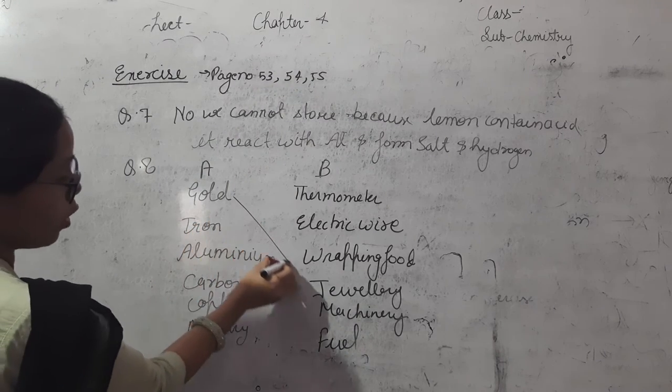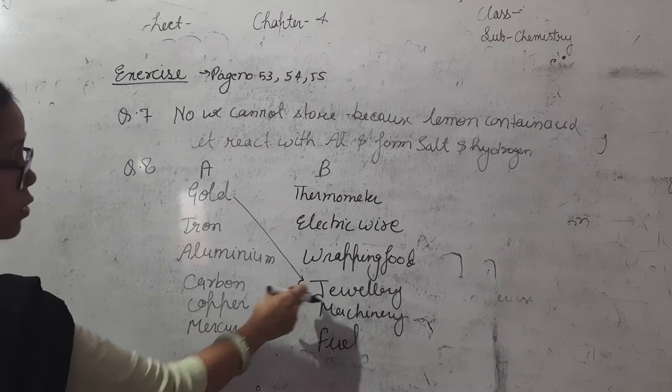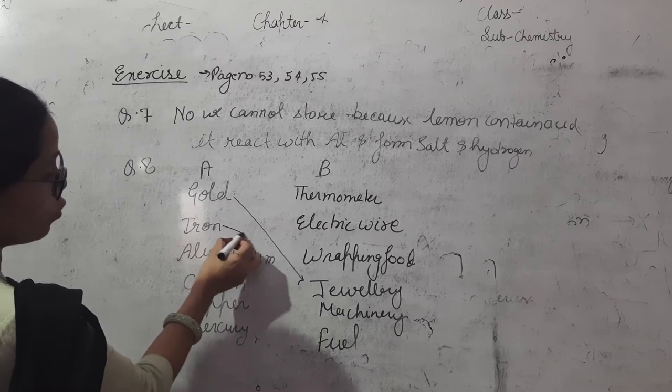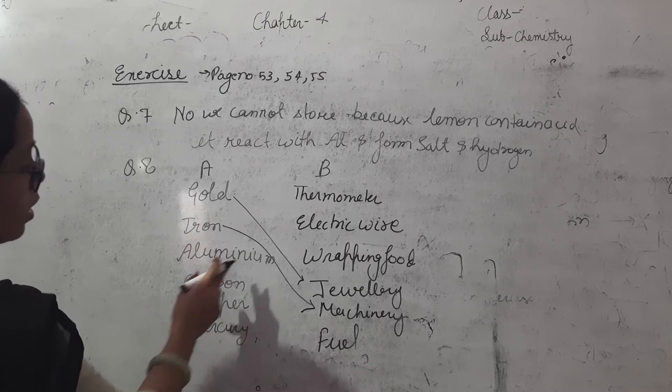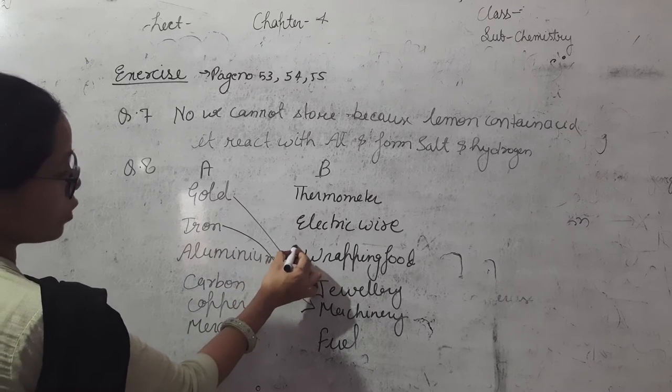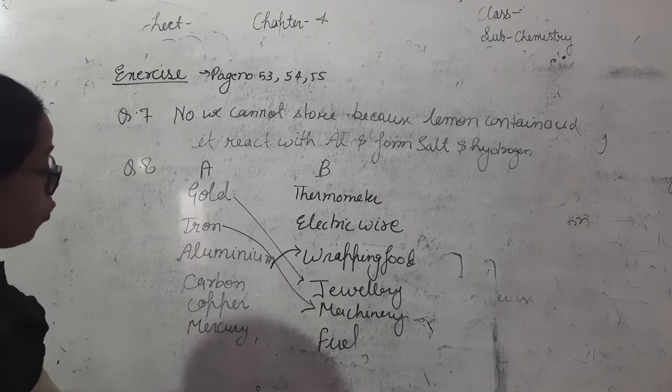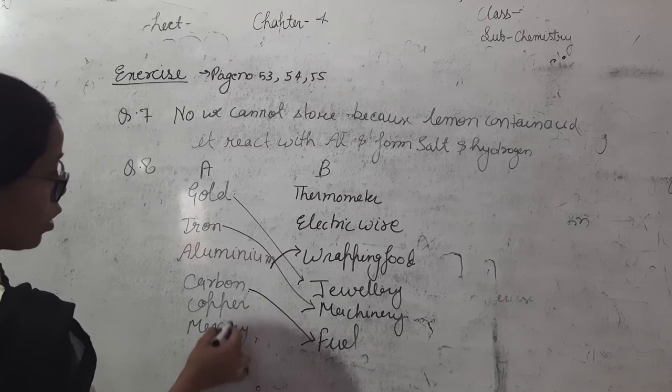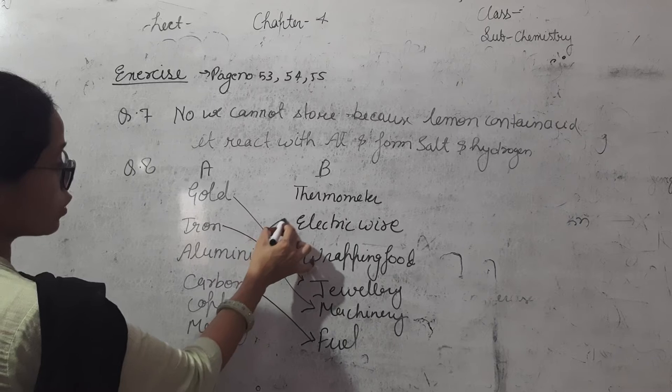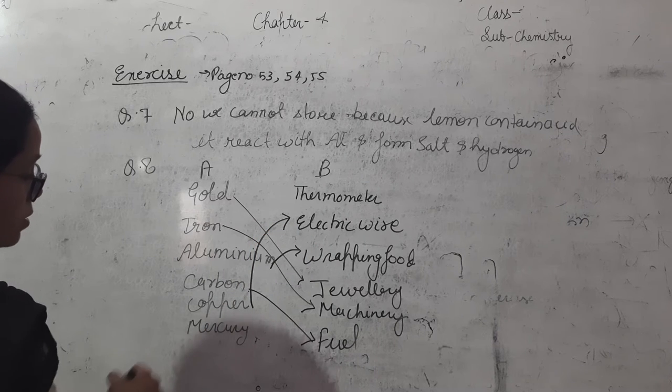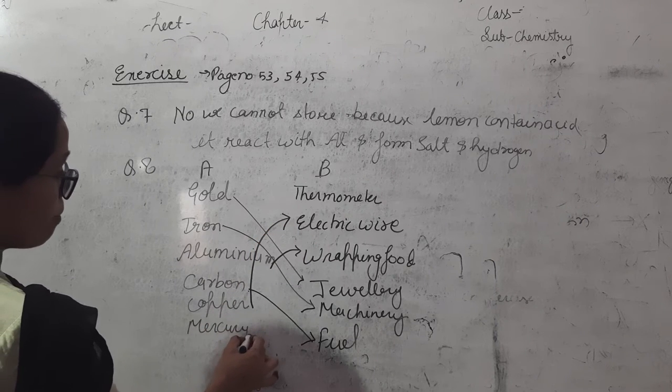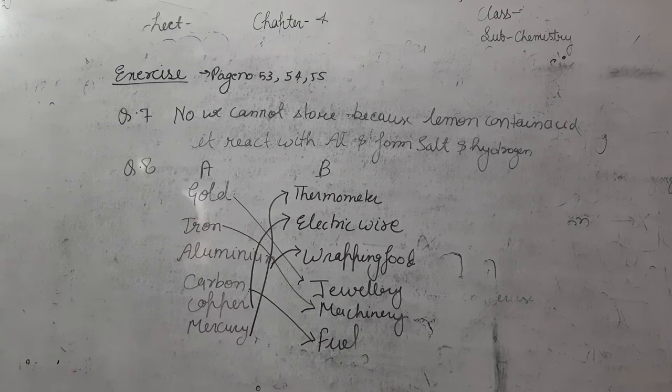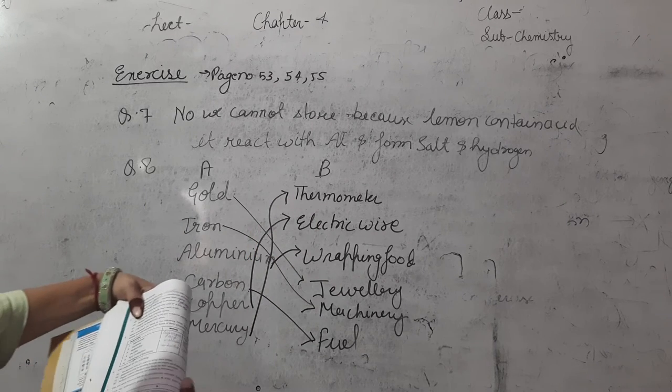So we match. Gold is used for making jewelry. Iron is used for making machines. Aluminum is used for wrapping food. Carbon is used as a fuel. Copper is used for electric wires. Mercury is used in thermometer.